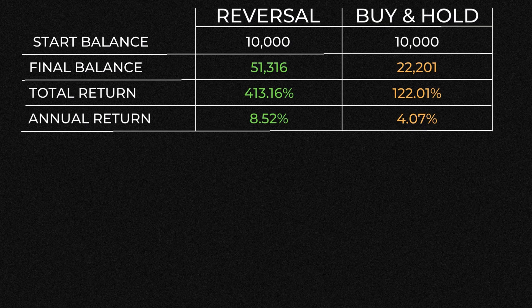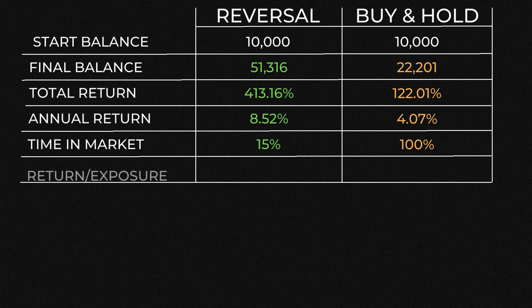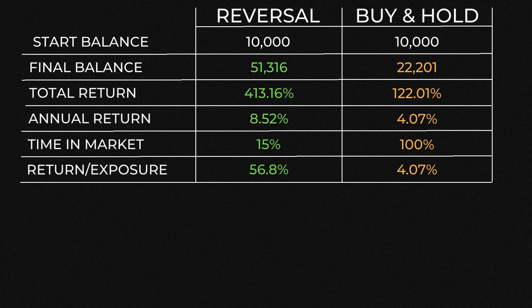The next metric is where it starts to get more interesting, and this is the time in the market. Buy and hold produced that 4% by being in the market the entire time. The reversal strategy was only in the market 15% of the time, so for the remaining 85%, that cash was free to be used on other strategies. If I take my return and divide it by the time in the market, I get a metric for the return by exposure. For buy and hold, nothing changes because it was always in the market 100% of the time — still 4.07. But the strategy's metric is 56.8, a significant difference.